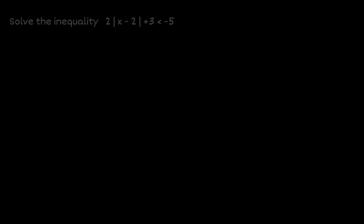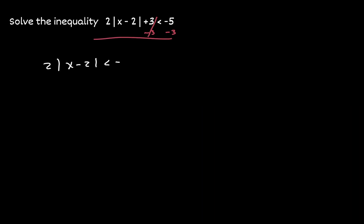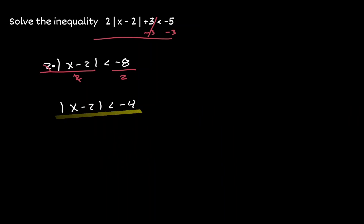Let's take a look at another example. We have the expression 2 times the absolute value of x minus 2, plus 3, and we want to see when that is less than negative 5. Let's start by isolating the absolute value of x minus 2. Let's subtract 3 from both sides, giving us negative 8 on the right. Then divide both sides by 2. Now we want to consider the inequality where the absolute value of x minus 2 is less than negative 4.